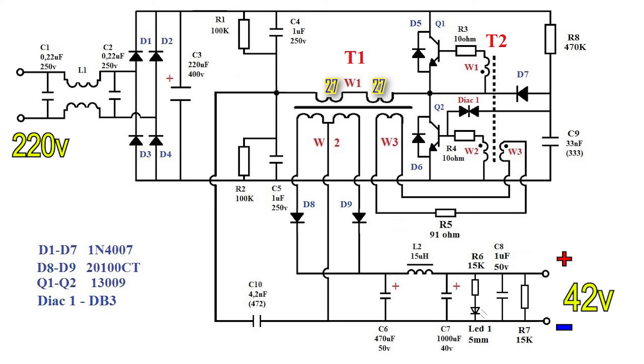The secondary winding W2 also consists of two semi-windings, each with 15 turns. The entire winding is tapped from the middle.